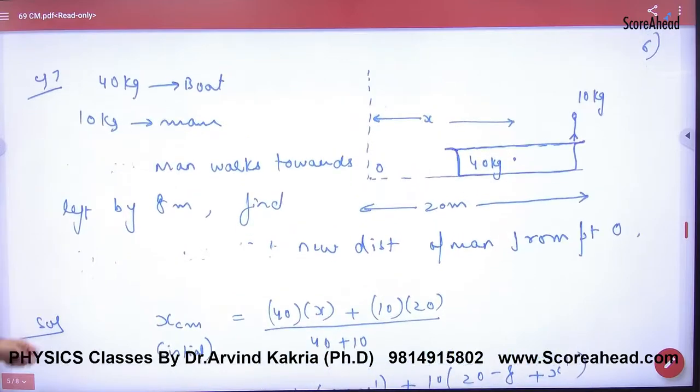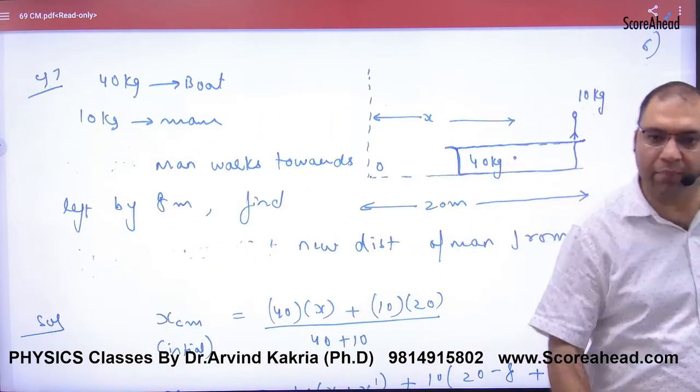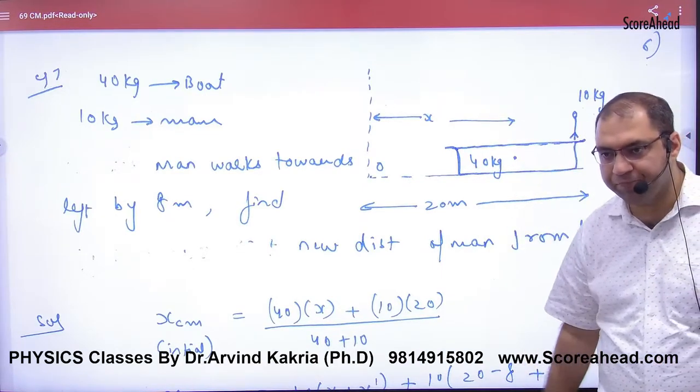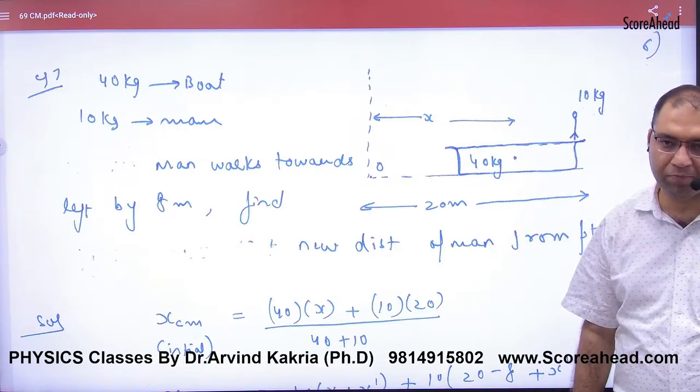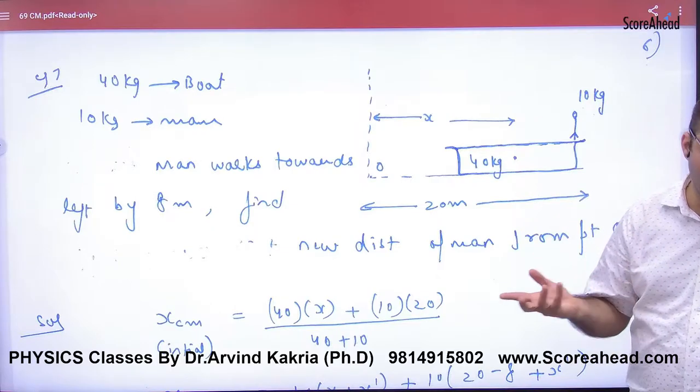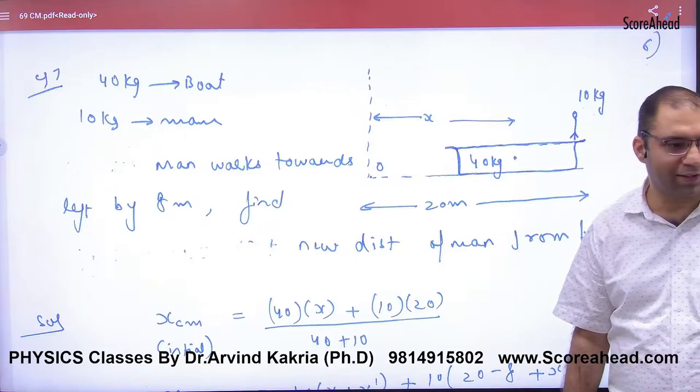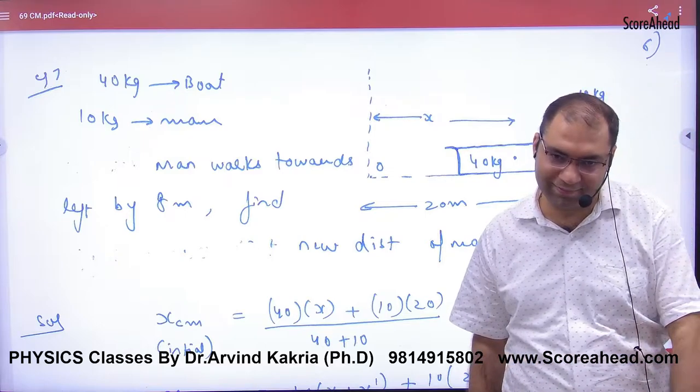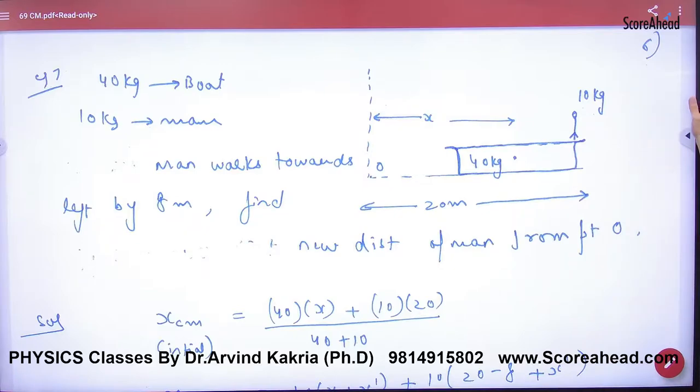Okay, this is a question. Suppose that a boat is 40 kg and a man is 10 kg. This is a boat, 40 kg, and this is 10 kg man. Now suppose that a man is 10 kg, a 40 kg boat, and this is a cone.